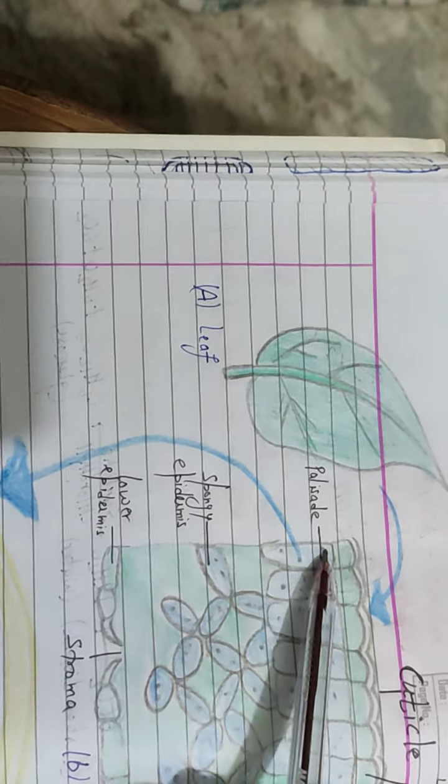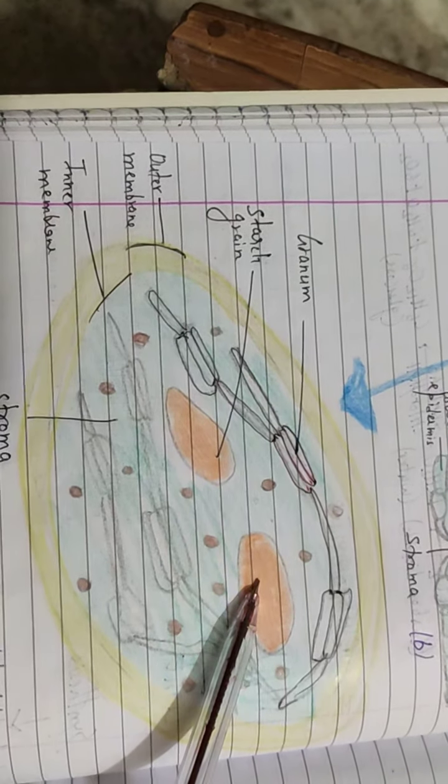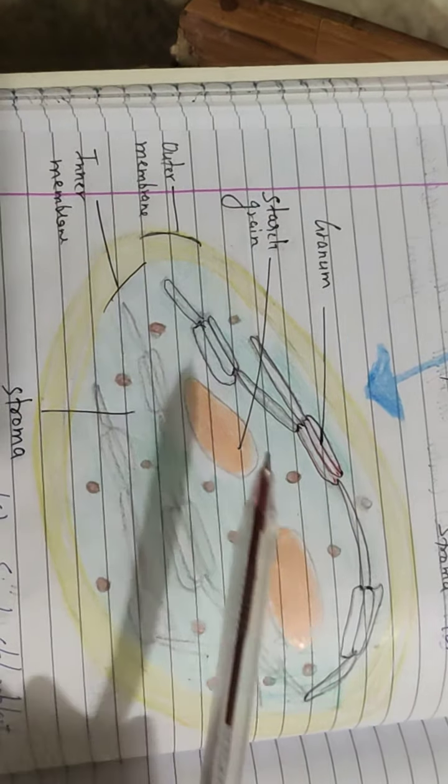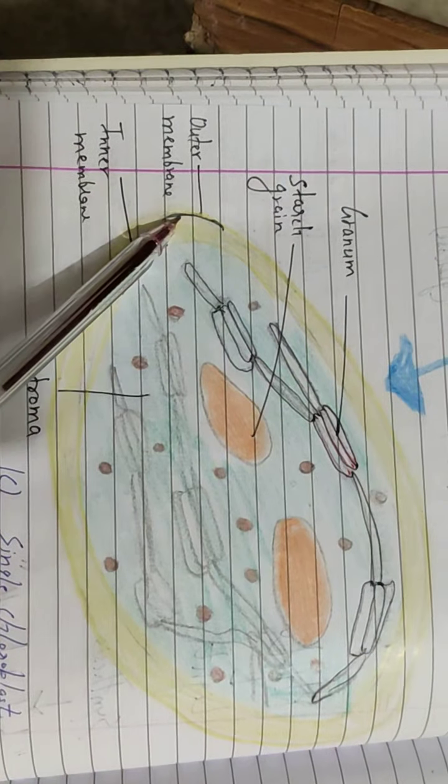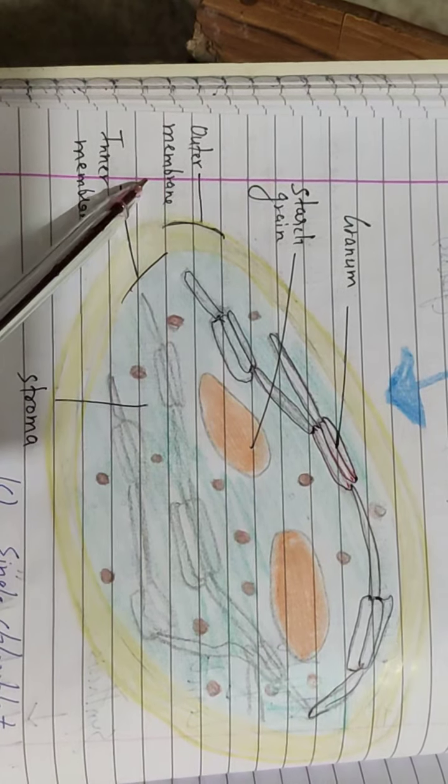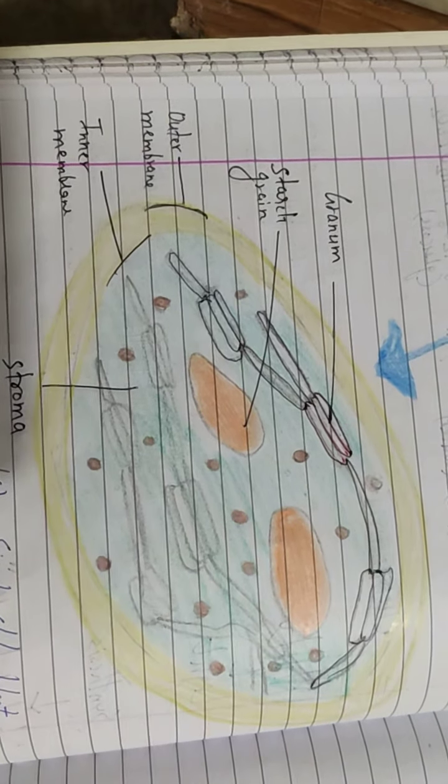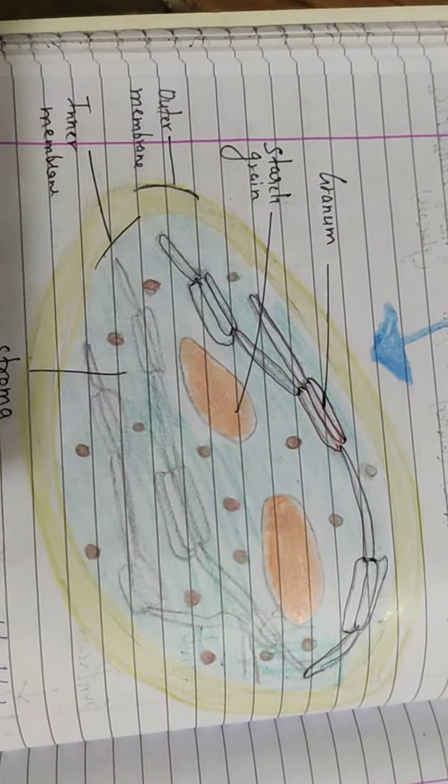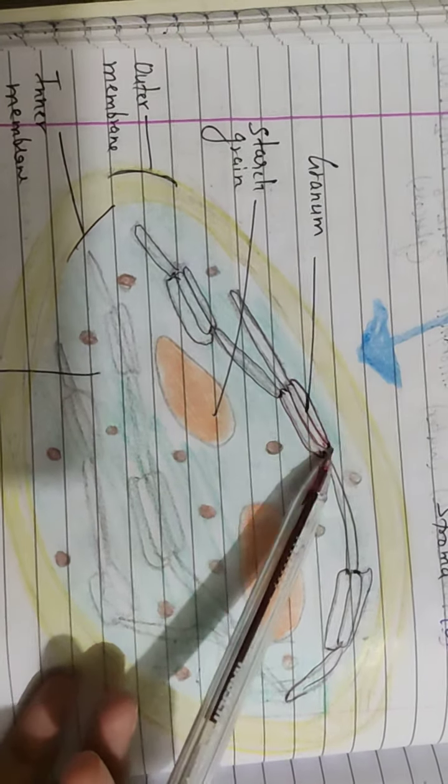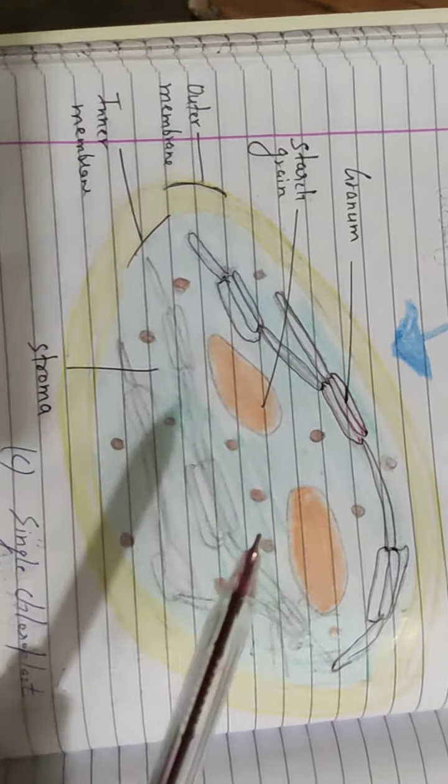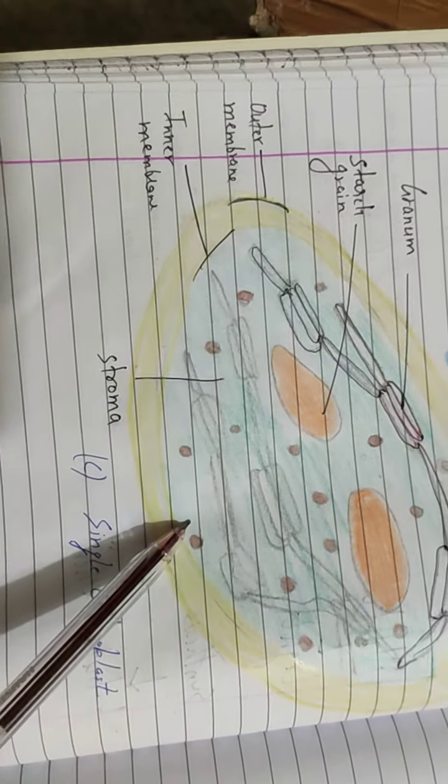If we take a palisade cell and look at the chloroplast under the microscope, we will see that firstly it is a double membranous structure. The first one is outer membrane and the inner one is inner membrane. Here is the most important structure which we have to note down: granum. Granum is a stack of lamella-like structure. Second important one is stroma. This green portion represents stroma.